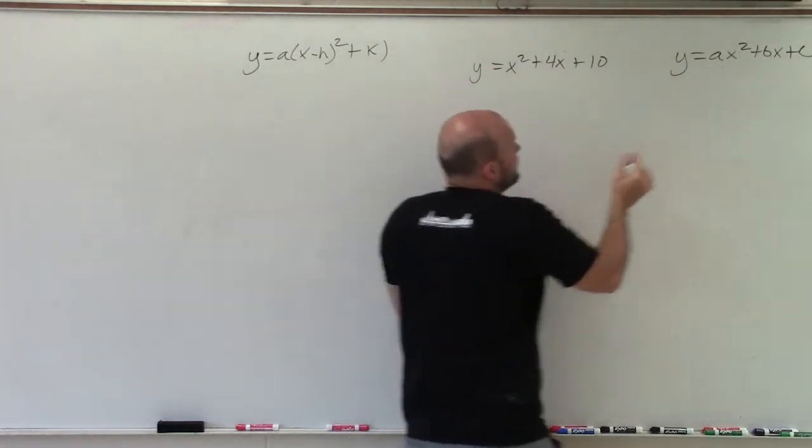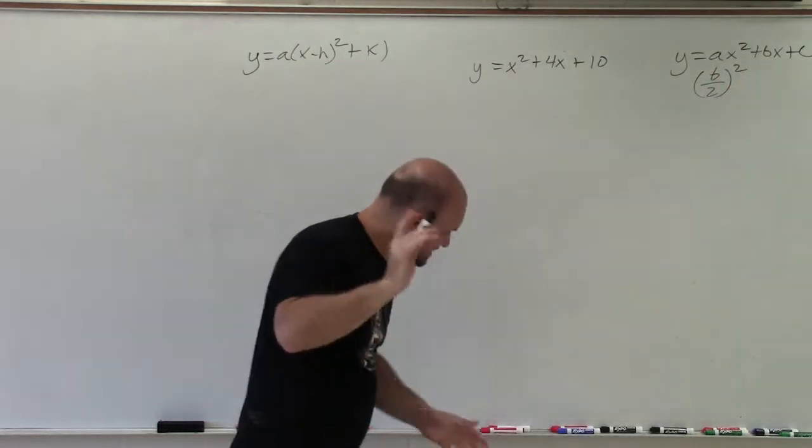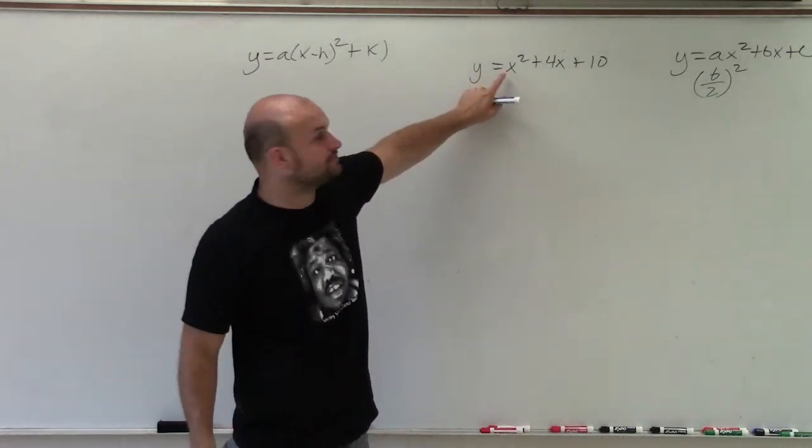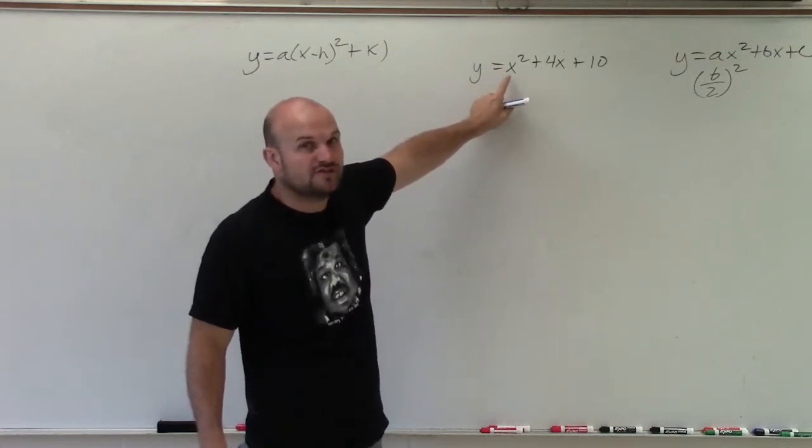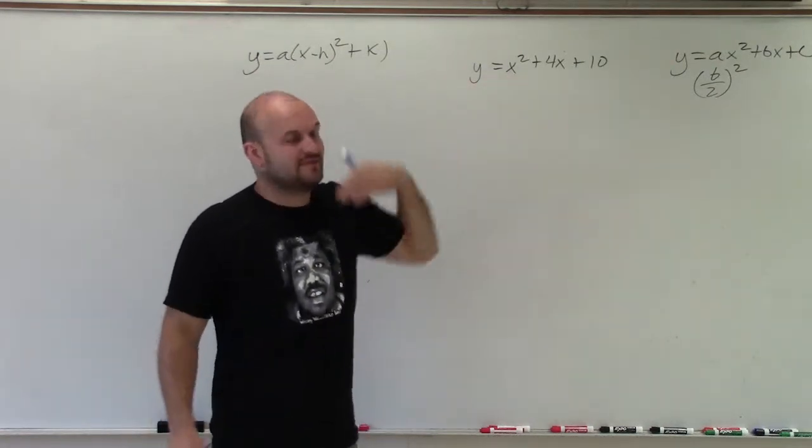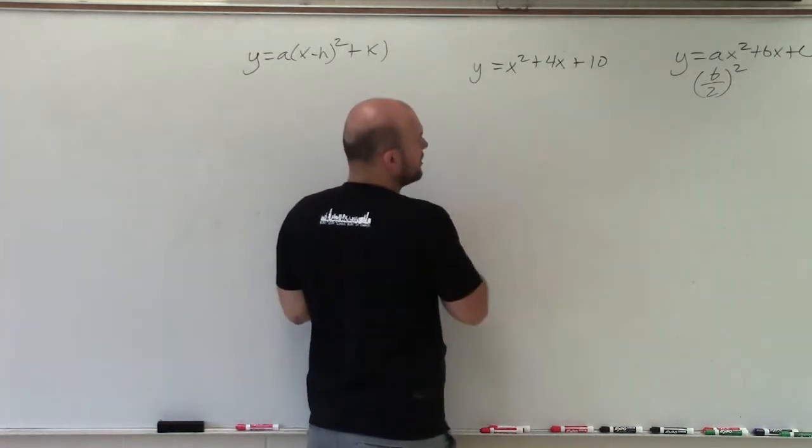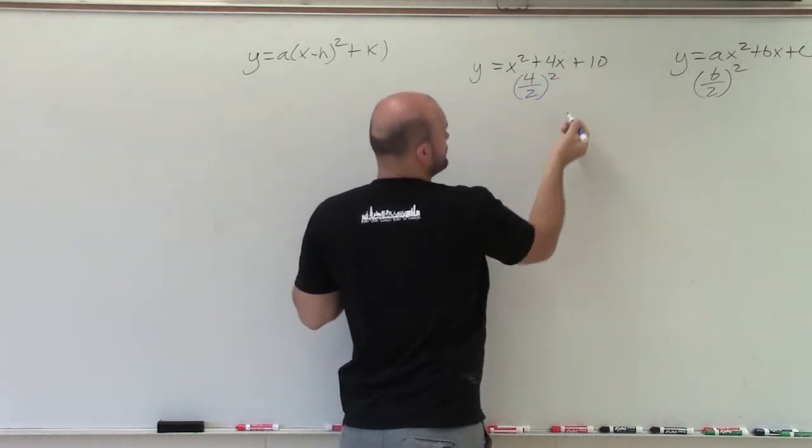To do that, we're going to take b divided by 2 and square it. Actually, I skipped a step. Before we do that, we've got to make sure our quadratic term only has a coefficient of 1. If it does not, we'd have to factor out. But in this case, we have 1 as our coefficient.